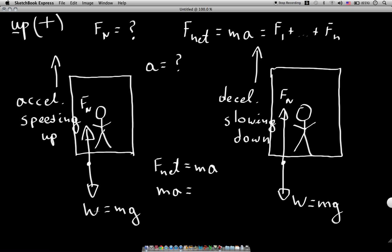So here we would write Fn minus W. W we have, we can find. This we have, and the only thing missing is Fn. So as long as you're going up, this is the equation that you have, and that is going upwards.